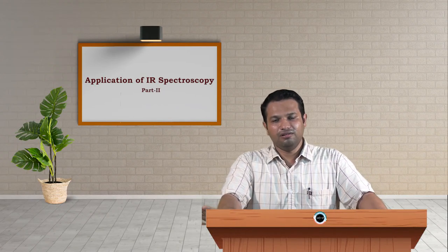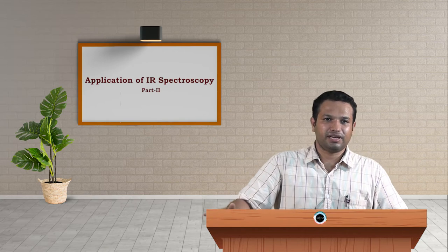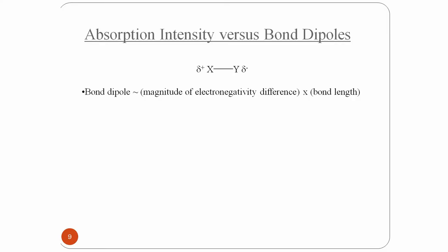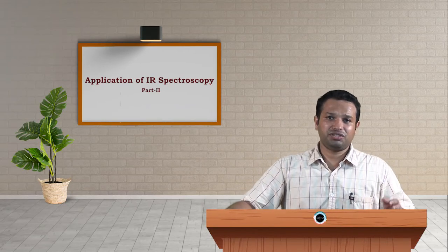Now let us see how absorption intensity will vary according to bond dipoles. The bond dipole is directly related to the electronegativity difference between the two atoms and also the bond length. If the electronegativity difference increases, the dipole also increases, and if the bond length increases, the dipole also increases. If the bond dipole increases, then absorption increases. So the most intense peak is because of the bond dipole and the absorption is also very high.